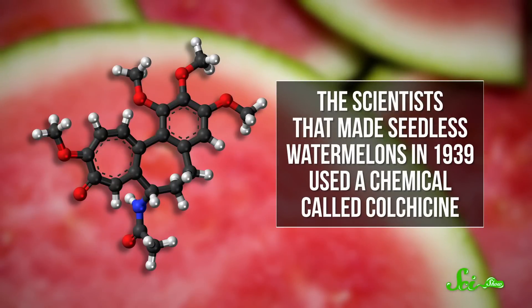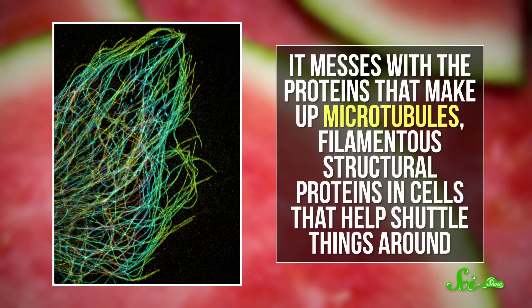The scientists that made seedless watermelons in 1939 used a chemical called colchicine. It messes with the proteins that make up microtubules, filamentous structural proteins in cells that help shuttle things around.